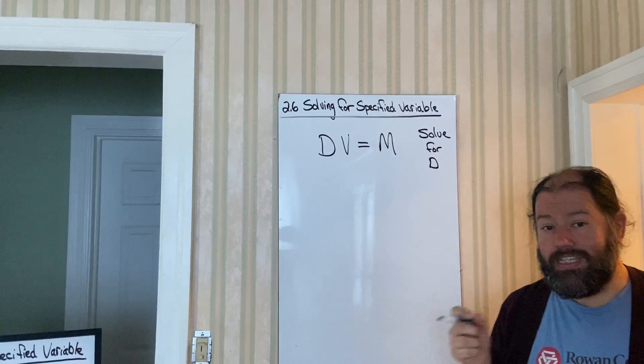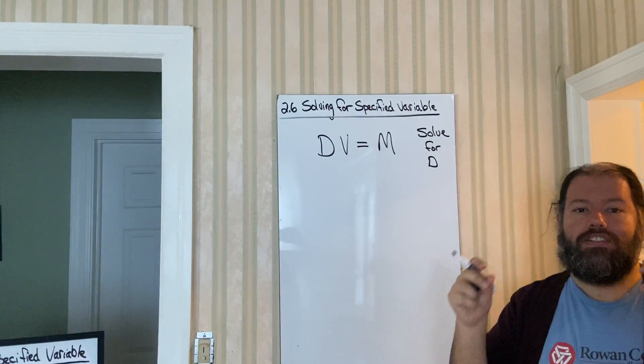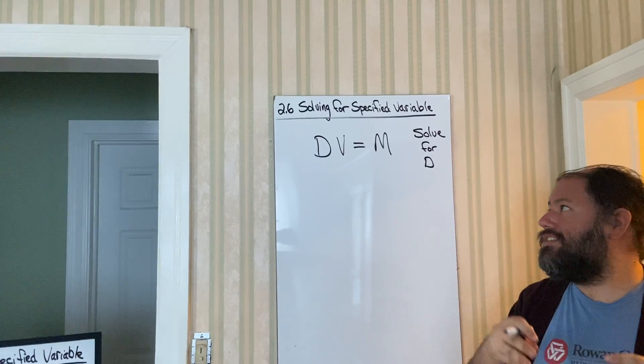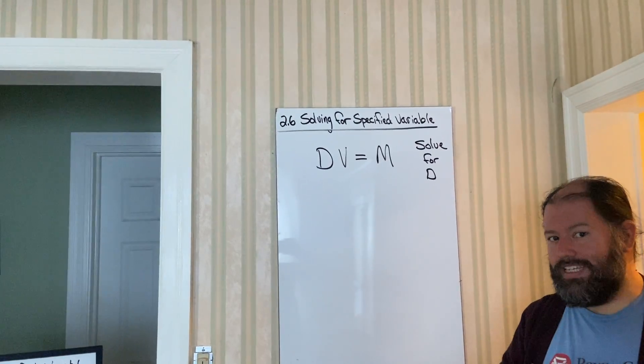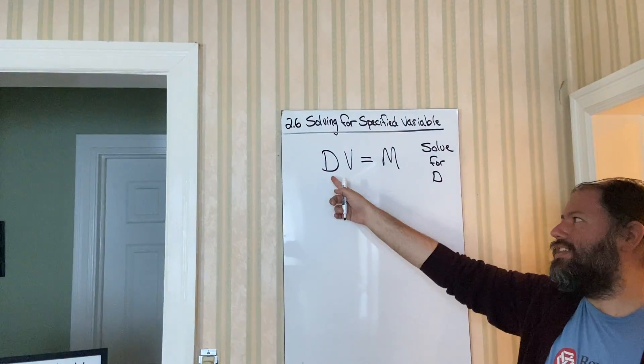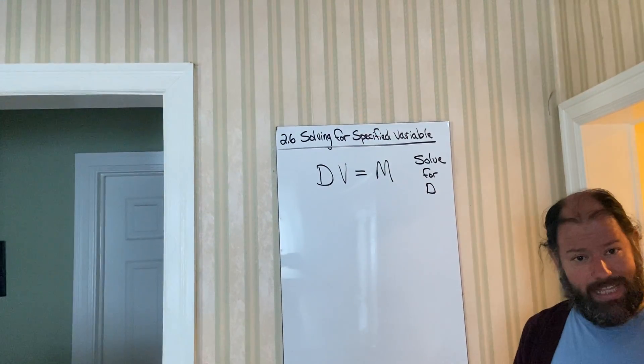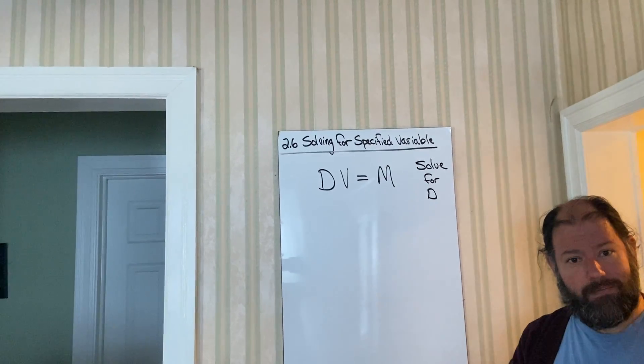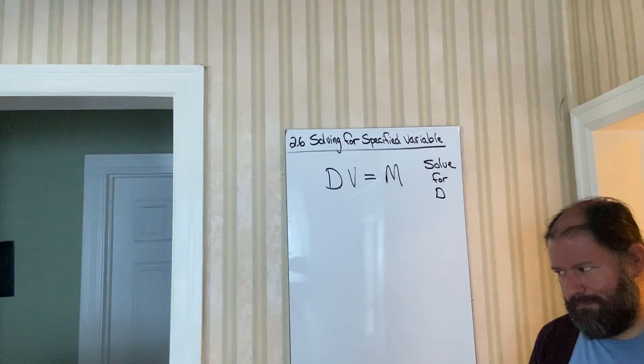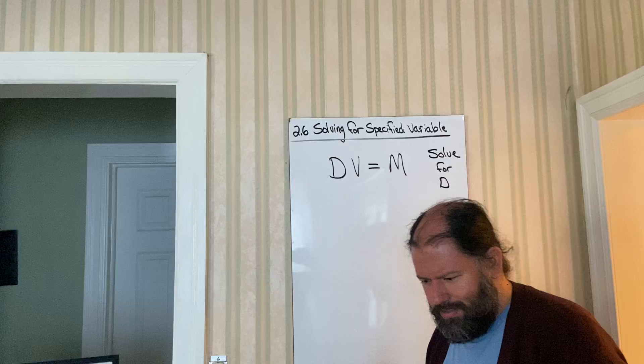So, you're going to have to manipulate this equation so that you can get the letter D by itself. Right now, D is not by itself. It has a V listed. Now, some problems are going to have nothing but letters, and other problems are going to have numbers listed. So, how do we solve this?